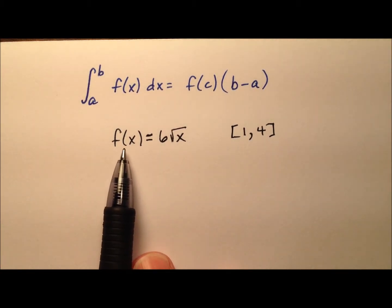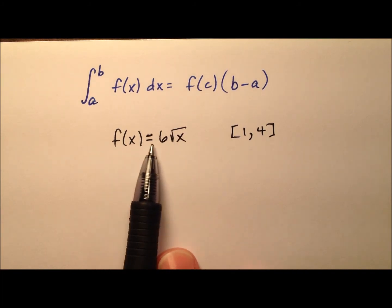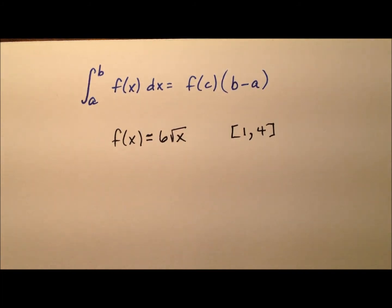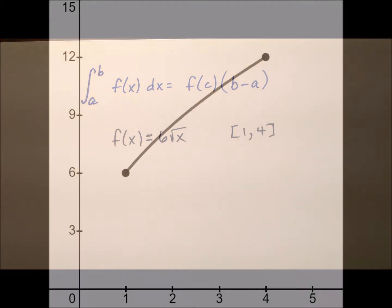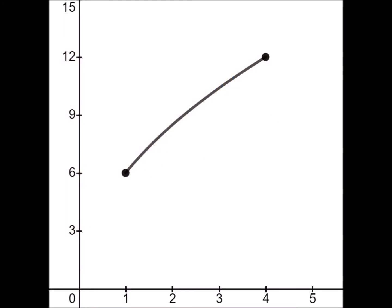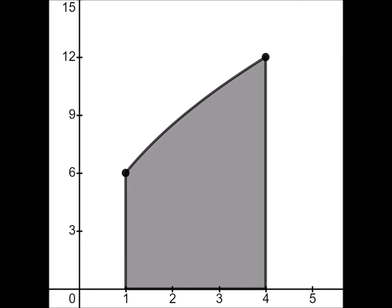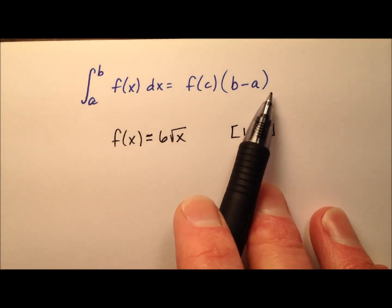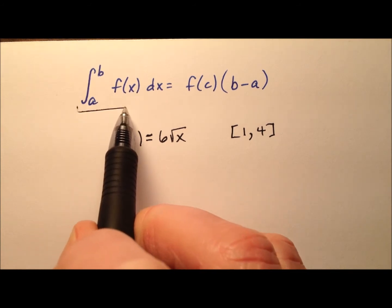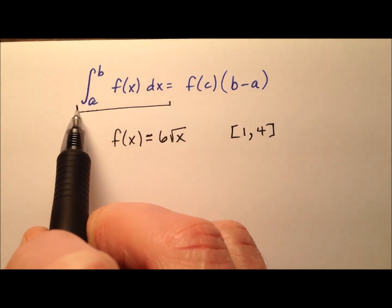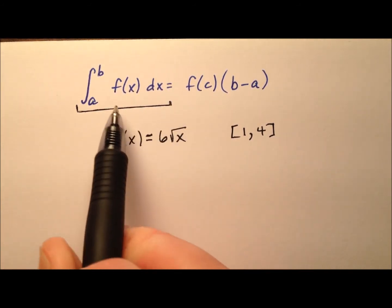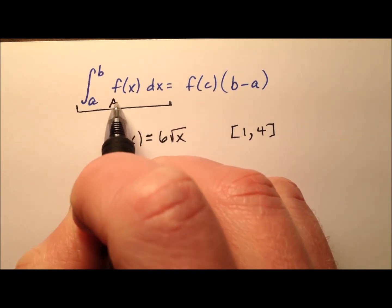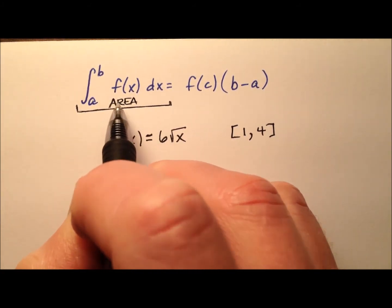Let's start by looking at the graph of this function, f of x equals 6 times the square root of x, as well as the region that we're going to find the area for. This mean value theorem for integrals, on this left side of the equation, we have this definite integral, which is going to find the area of the region we just looked at in that graph.